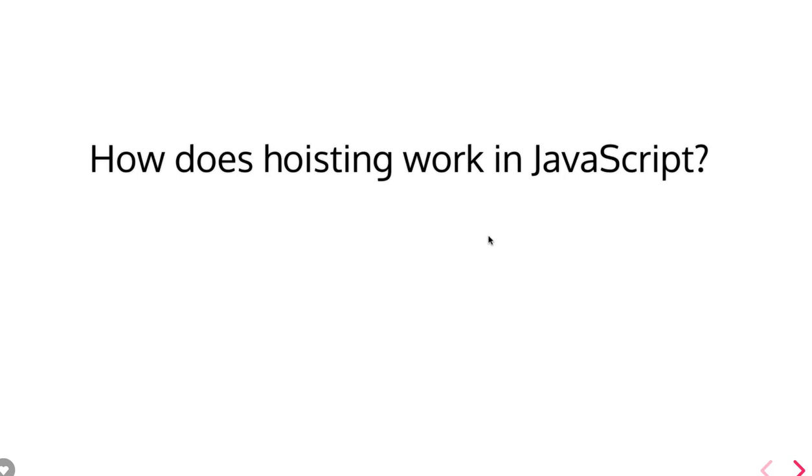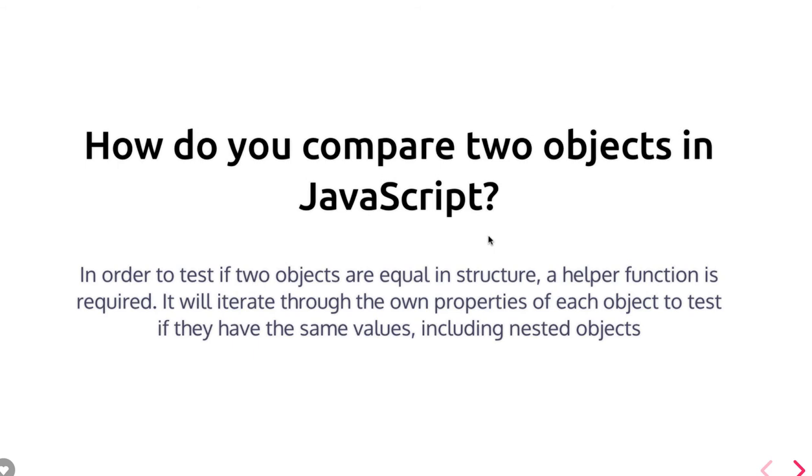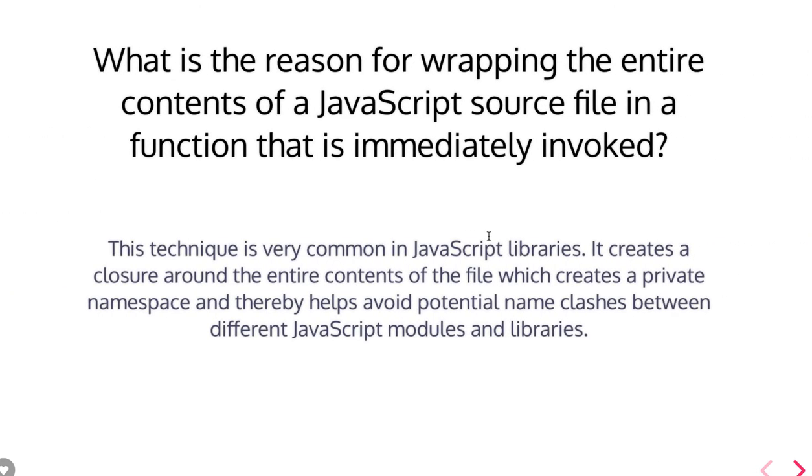How do you compare two objects? You can write a compare method - just stringify both objects and compare the strings, or iterate on each and every property. An important question is about IIFE - Immediately Invoked Function Expression - which is a strict block.